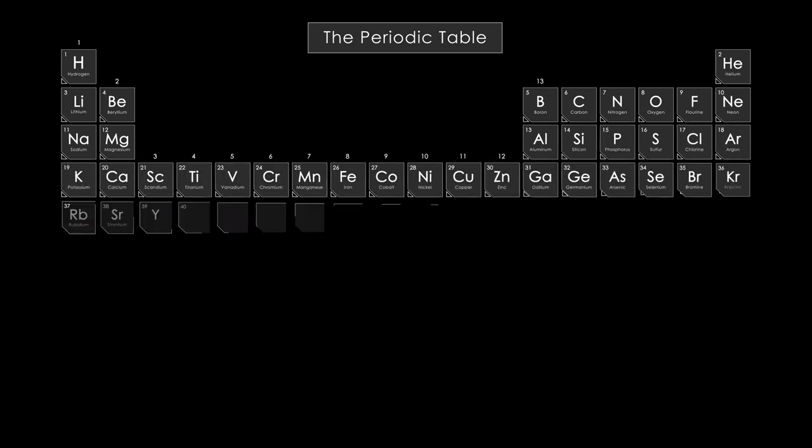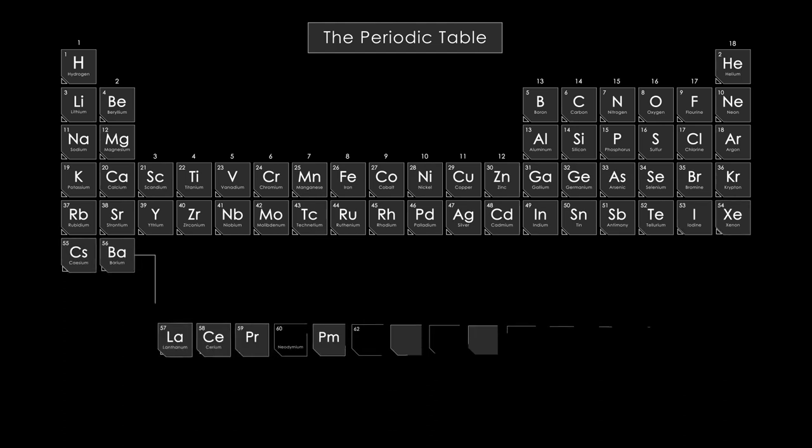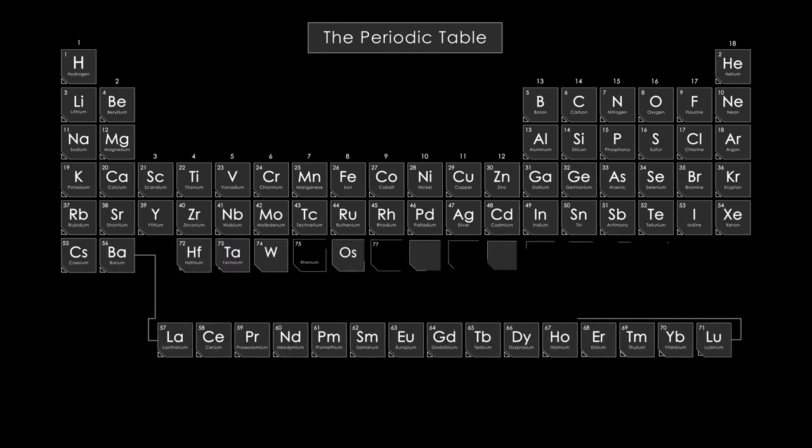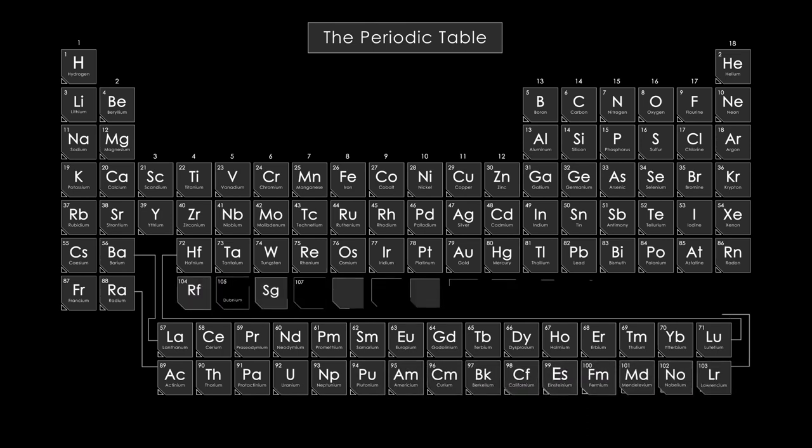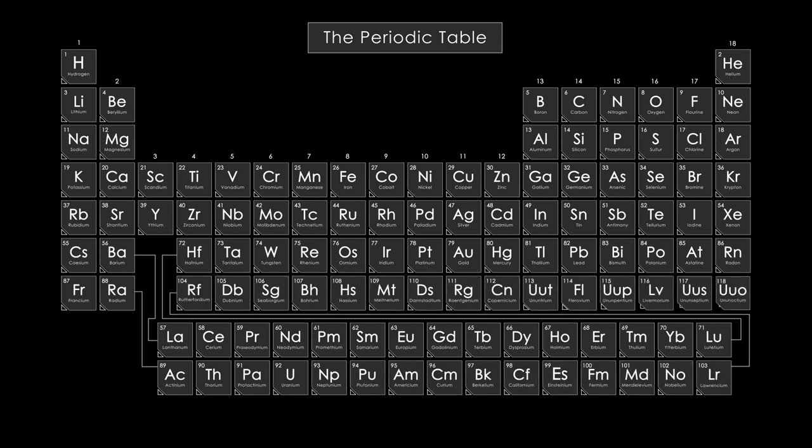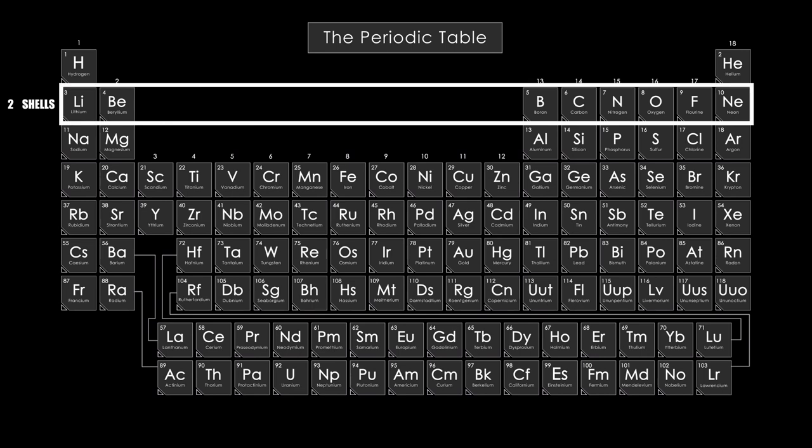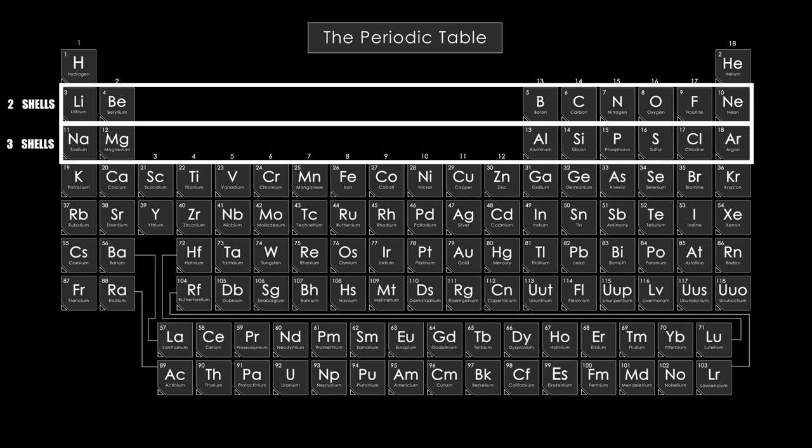The number of electrons in an element's outermost shell increases by one as you move through the elements in a row of the periodic table, although the number of shells remains the same. The number of shells can be deduced from the row number. For instance, every element in the second row will contain only two shells, every element in the third will contain only three, and so on.